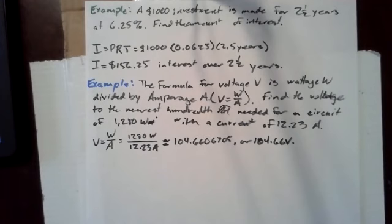Find the voltage to the nearest hundredth needed for a circuit of 1,280 watts with a current of 12.25 amperes.